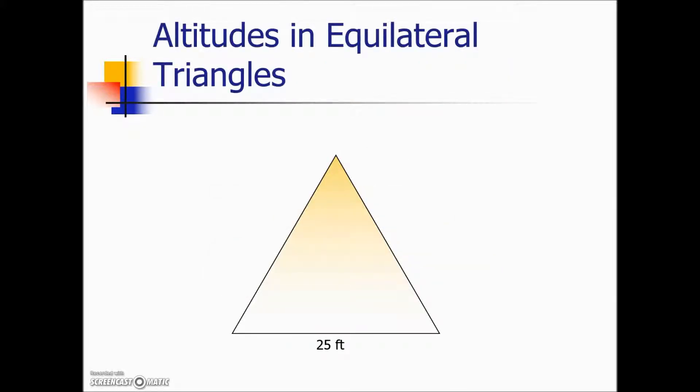If we have an equilateral triangle and we draw the altitude, the same thing occurs. It's going to bisect the vertex angle. It will cut the opposite side in half and it will form two equal right triangles.